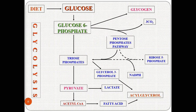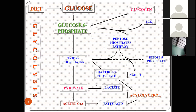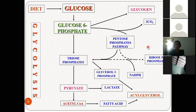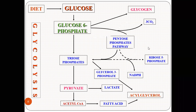Glucose is also converted through an alternate pathway called the pentose phosphate pathway or HMP shunt. This is a very important pathway producing two important compounds: ribose-5-phosphate and reducing equivalents in the form of NADPH. Ribose phosphate is utilized for the synthesis of nucleotides — nucleic acids DNA and RNA. NADPH, the reducing equivalent, is utilized for the anabolic process. Glucose is converted to fatty acids and acylglycerol, and these require NADPH.